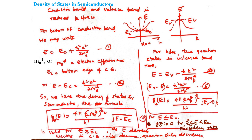In semiconductors we have a conduction band and a valence band. For electrons in the conduction band above the band edge E_C, the energy is written as E = E_C + (ℏ²k²) / (2m_e*), where m_e* is the effective mass of the electron, also written as m_n* in some books. E_C is the bottom edge of the conduction band. This gives us E − E_C = ℏ²k² / (2m_e*).